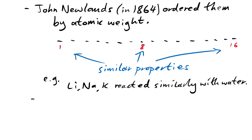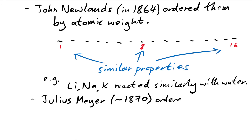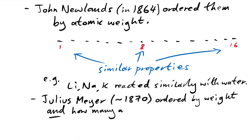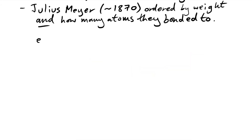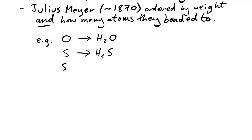Then comes along somebody else — Julius Mayer, at around 1870, who ordered them by weight and how many atoms they bonded to. For example, oxygen can bond to two hydrogens, and so can sulfur, and so can selenium. So they were starting to get a picture of how they thought these elements should be arranged.